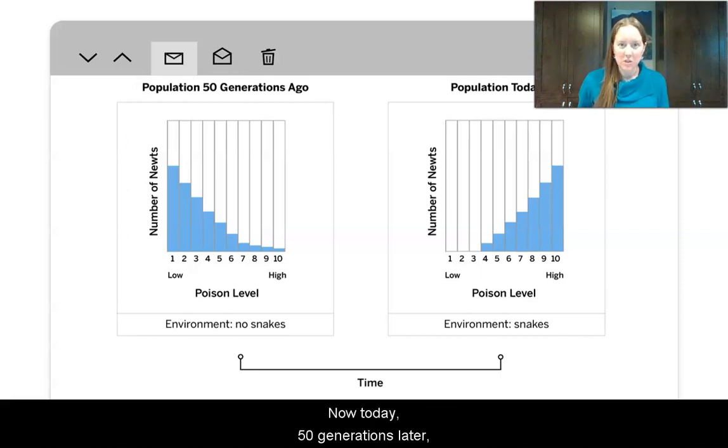Now, today, 50 generations later, I can see that a lot more of the newts have very high poison. The highest bars are in 8, 9, and 10 levels of poison.